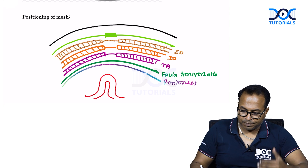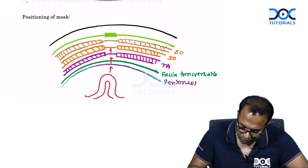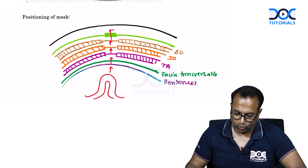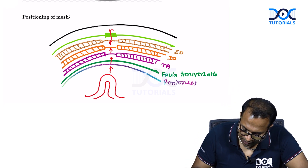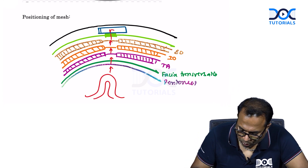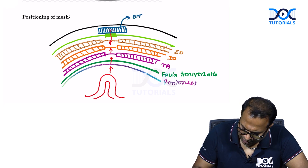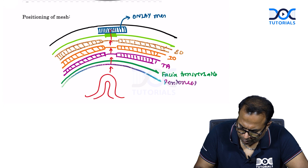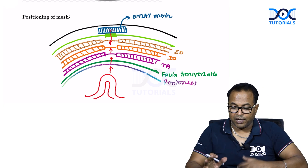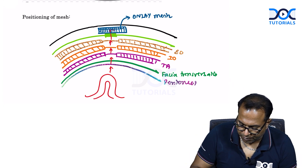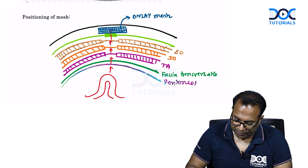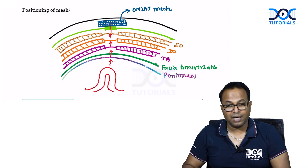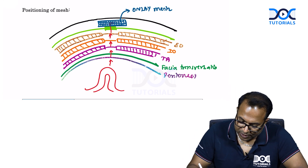A hernia is when bowel contents come out through a defect in the abdominal wall. Mesh can be placed in three methods. Method one is onlay mesh, placed just below the skin on the anterior rectus sheath — that is, on top of the muscle or fascia in the subcutaneous space.